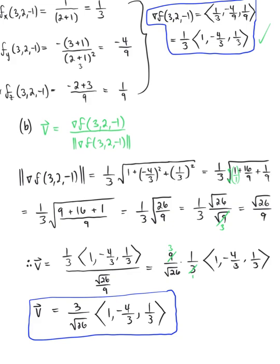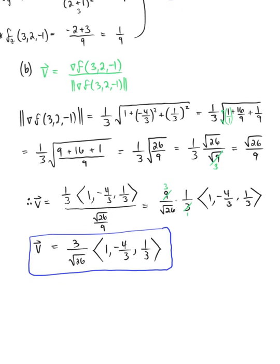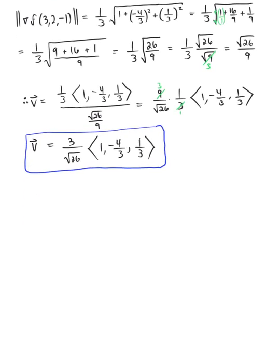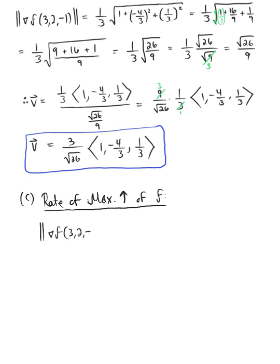Part C is asking us to find the rate of maximum increase. The rate of maximum increase of our function f is defined by the magnitude of our gradient at the given point (3, 2, -1). We just found this above: the square root of 26 over 9. So there it is — that is our answer to Part C, the rate of maximum increase.